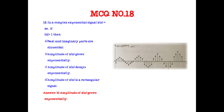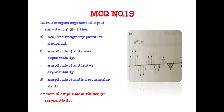For the same complex exponential signal x(n) = a^n · e^(jωn + φ), if |a| > 1 the signal grows exponentially. If |a| < 1, the signal decays exponentially.